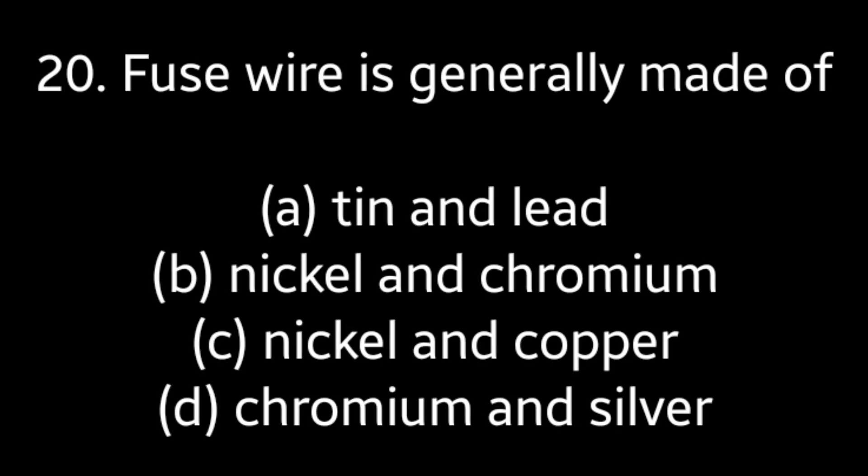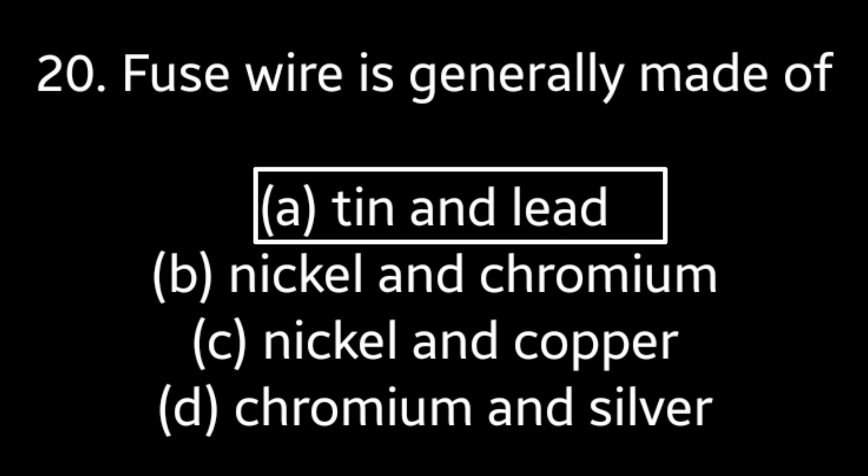Question No. 20: Fuse wire is generally made of — Tin and lead, Nickel and chromium, Nickel and copper, Chromium and silver. Answer is Option A: Tin and lead.